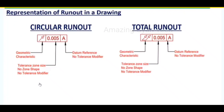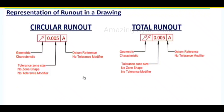How we represent runout in a drawing: in the feature control frame all three zones are utilized. The first zone has the geometric characteristic symbol — one arrow mark for circular runout and two arrow marks joined by a horizontal line for total runout. The tolerance zone has a size but no shape, and no tolerance modifier can be applied — MMC or LMC will not be applied. There is no room for modifiers here, and no zone modifier either since it is a wide tolerance zone. Datum reference is compulsory, and for the datum reference also, the MMC and LMC condition is not applicable.